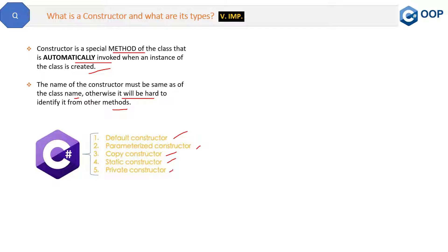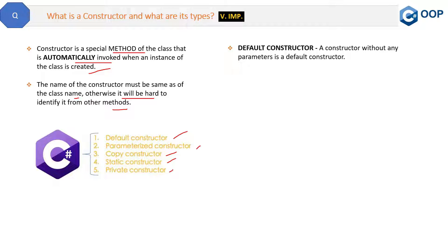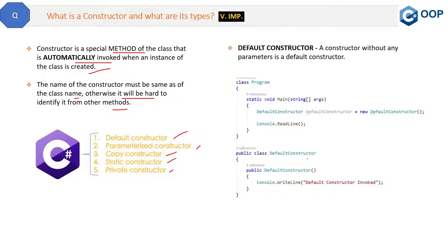Let's start with the first type: the default constructor. A constructor without any parameters is a default constructor — it's the simplest one. In the code, we have a class called DefaultConstructor, and inside it we have a constructor with no parameters whose name matches the class name. When we create an object of this class in the main method, it will automatically call this default constructor.